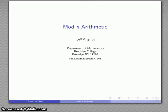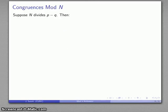One of the more useful extensions of the number concept is modulo n arithmetic, and this works as follows. Suppose I have some positive integer n greater than 1, and suppose that n divides the difference p minus q of two other integers, which could be positive or negative. Then we have the following.